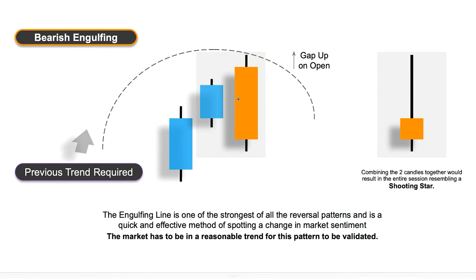The next couple of candle formations are what we call engulfing patterns. The first one is the bearish engulfing pattern, which is quite a popular and dominant pattern. What we've got here is two positive candles going up, and then we've seen the market gap up open — the market has moved up and gapped above its previous close, so we start to think there's positive momentum in the marketplace. But by the end of the day all of that gap has been removed; the sellers have dominated and the price has actually finished below the open price of the previous candle. You can see that it engulfs the previous candle — that's why we call it an engulfing pattern. It's a bearish pattern because we're starting to see a downward movement in the marketplace.